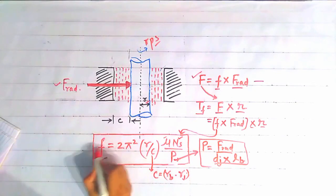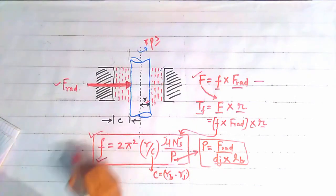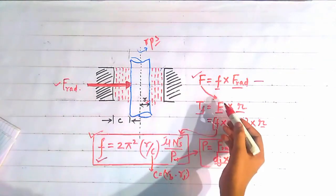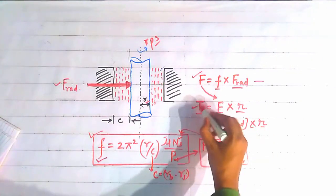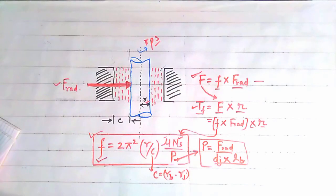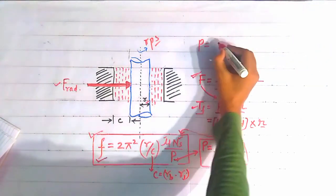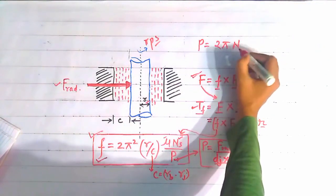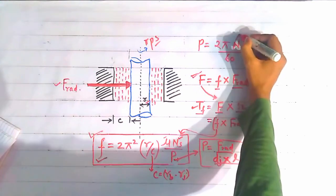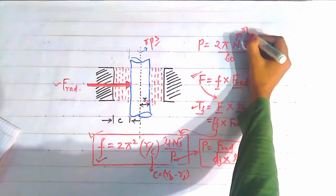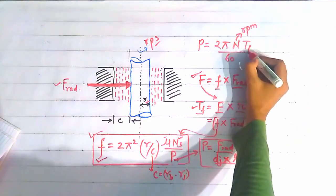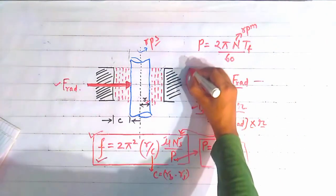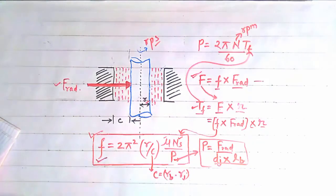The coefficient of friction from Petroff's equation can be used to find the frictional torque and the frictional force acting on the bearing. The power lost in friction is given by: Power = 2πN·T_F / 60, where N is the speed of the journal in revolutions per minute (RPM) and T_F is the frictional torque. So the power lost in friction can be found using Petroff's equation.